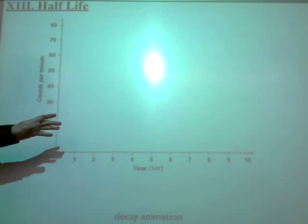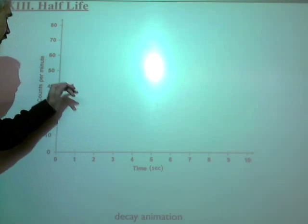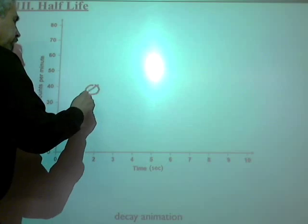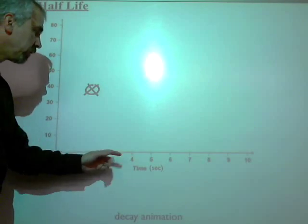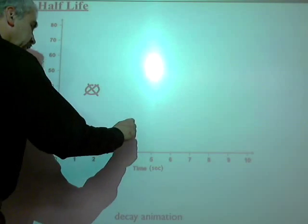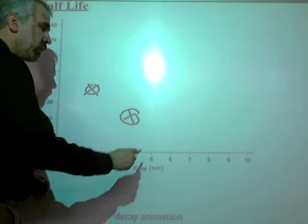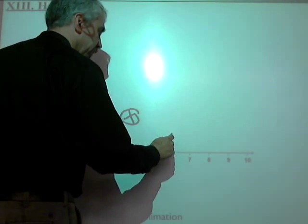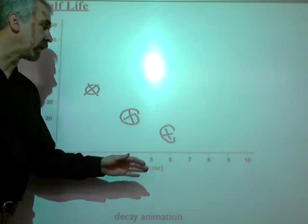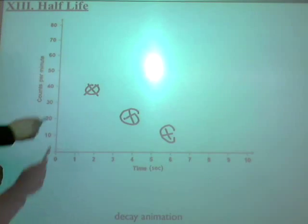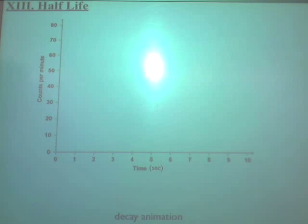As you'll see: after two seconds half of it is going to be gone, but after two more seconds the next half will be gone, and after two more seconds the next half will be gone. It keeps going like that, giving a graph that looks like exponential decay.